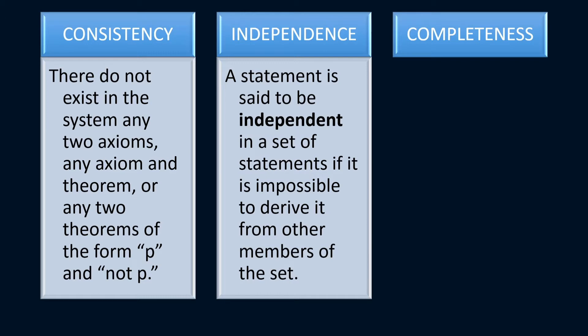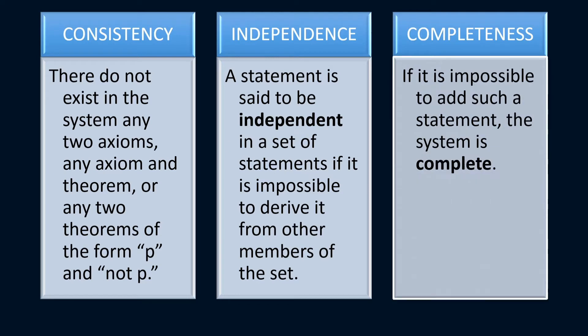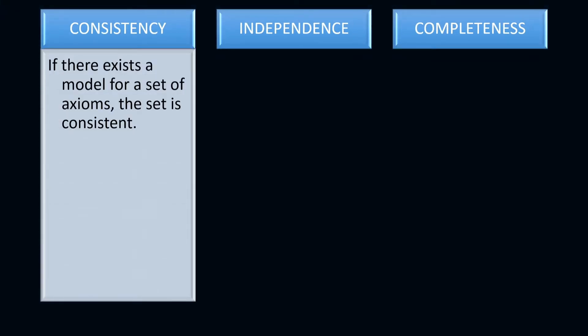The third property is completeness. If it is impossible to add any further statement, the system is complete. We say that an axiomatic system is complete if you cannot add any axiom anymore because it's already complete. The test of consistency is about creating a model — if there exists a model for a set of axioms, the set is consistent.